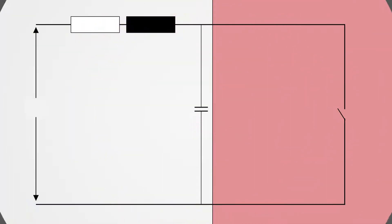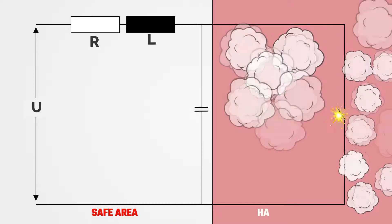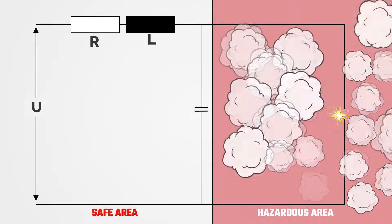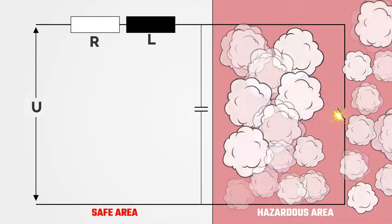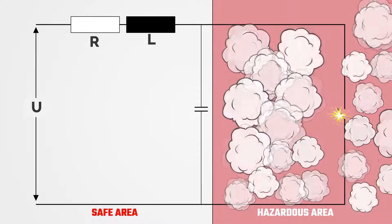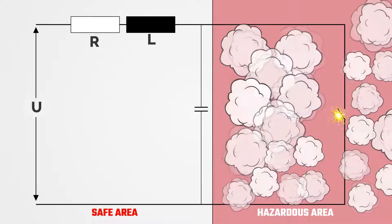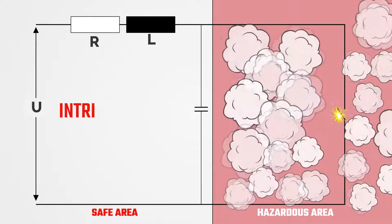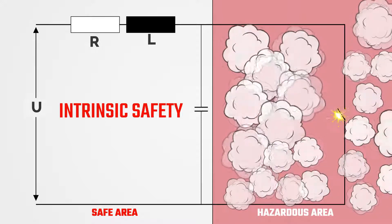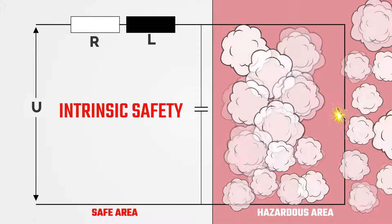A third method involves energy limitation. The energy of a spark caused by electrical equipment is not enough to ignite a surrounding gas. Furthermore, the rise in temperature of the device's surfaces is limited. This technique limits the energy during normal or even abnormal circuit conditions. This approach is referred to as energy limitation, and its protection technique is intrinsic safety.